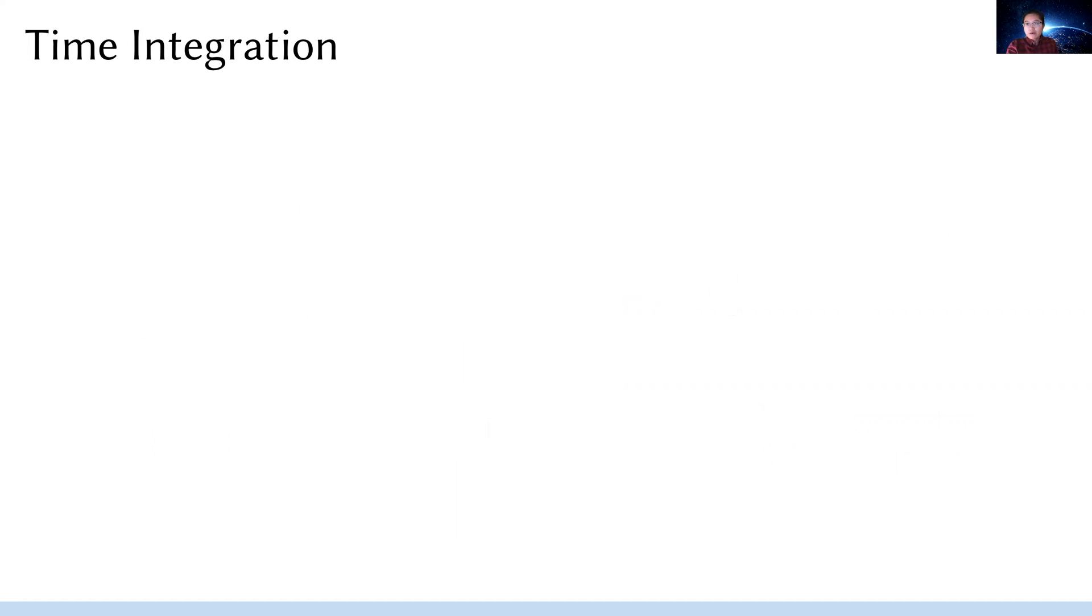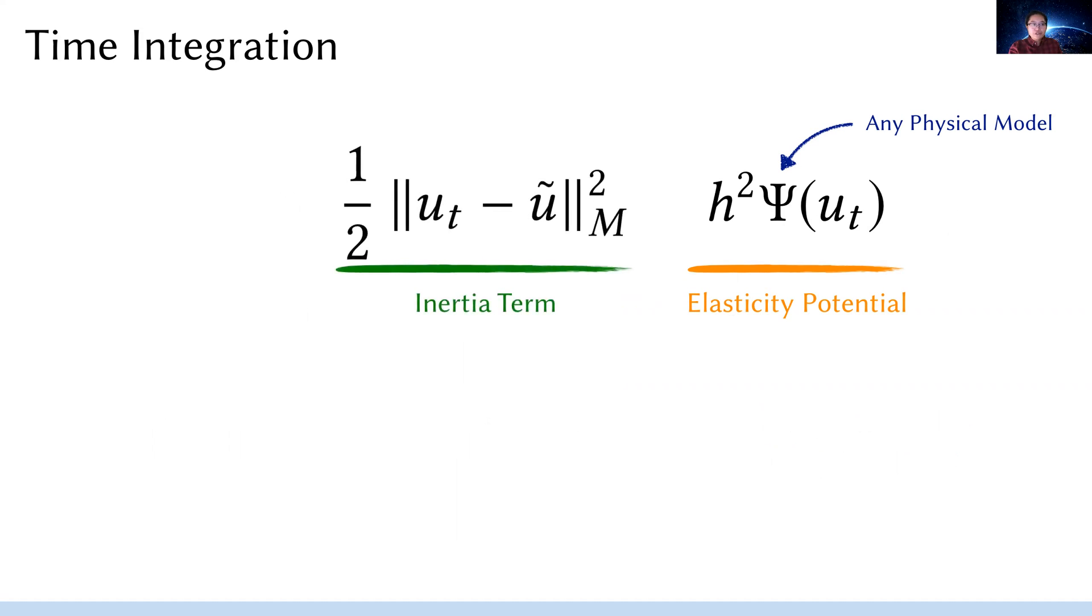Like most simulation papers, we start from the time integration. You are given the potential energy, where the psi function could represent any physical model without losing generality. You are also given an inertial term. In the paper, we use the most stable implicit Euler integrator as an example, but in theory any reasonable time integrator just works here, such as the implicit Newmark if you want the energy to be better preserved. Combining those two, the displacement finding problem for each frame is literally just an optimization problem, which is usually nonlinear due to the elasticity potential. And to suit our needs, we need to do this change of variable. So now the direct output becomes a complementary displacement.